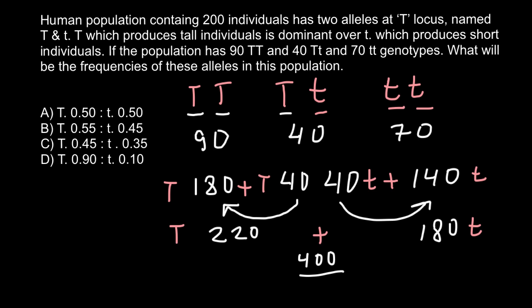So now in order to find frequency of the dominant allele T, everything we have to do, we have to divide 220 by 400. And as you see the answer would be 0.55. And if we divide 180 by the total number of alleles, we are going to get 0.45. And this is answer B.